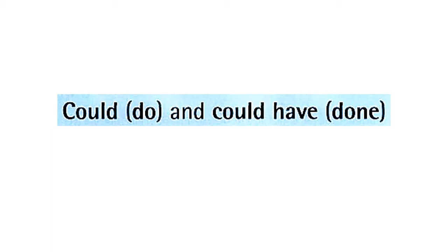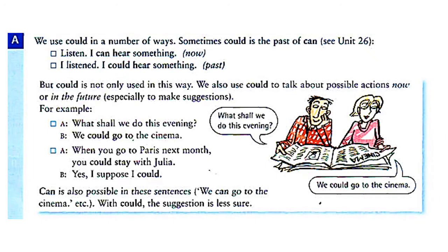Our lesson today focuses on the differences between 'could do' and 'could have done.' That's quite simple and easy, and I hope it will be clear throughout my discussion and explanation. Let's look at this example. We use 'could' in a number of ways. Sometimes 'could' is the past of 'can.'